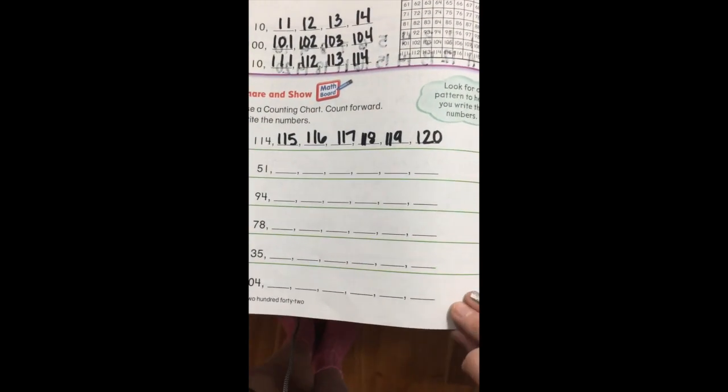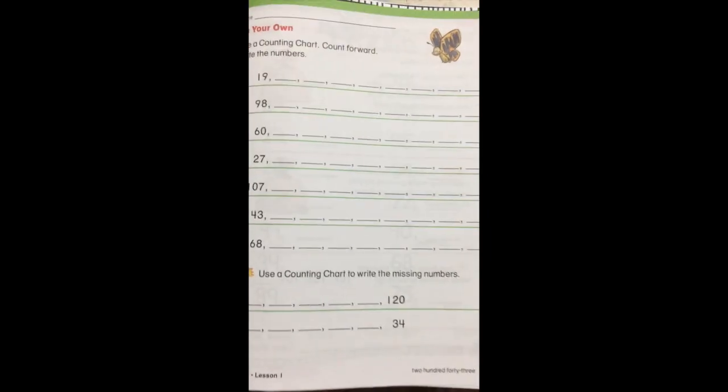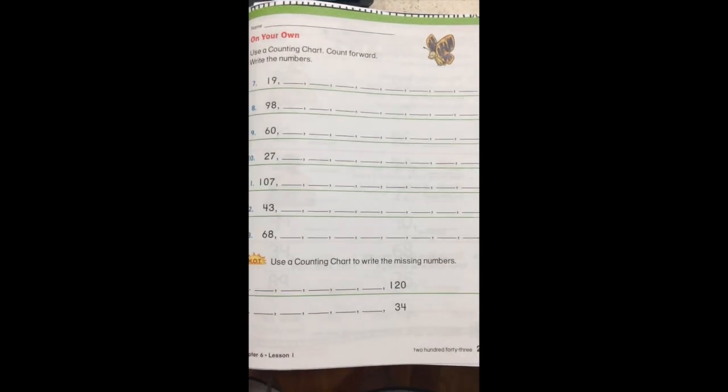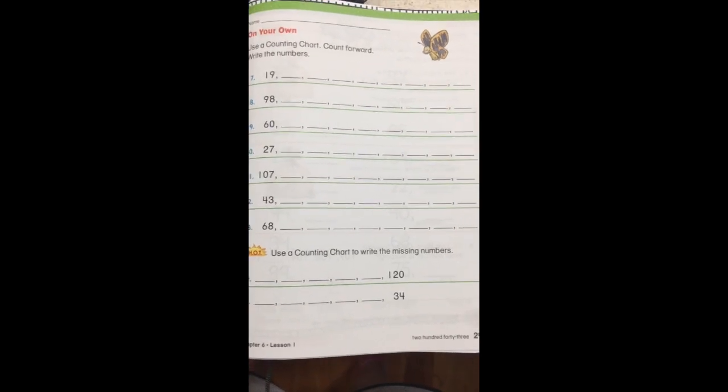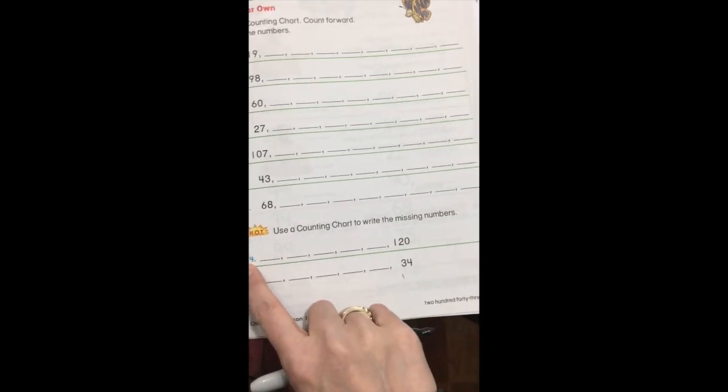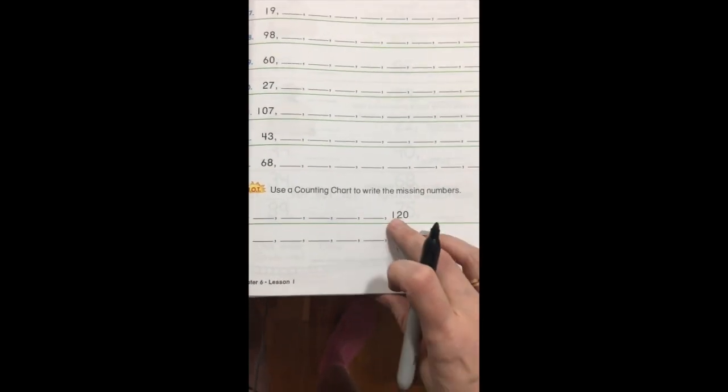And then I want you to come over here, and you're going to do the exact same thing. Let me go ahead and show you on number 14. So skip down there with me, and then you can go back and finish the ones in between. So they want you to use a counting chart to write the missing numbers. So sometimes we might not start at the front. We might start in the middle, or we might start with the ending number, just like they've done here. They started with the ending number. So you're going to start right here on 120.